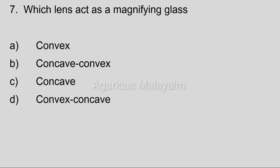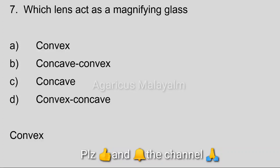Seventh question. Which lens acts as a magnifying glass? Option A, convex. Option B, concave convex. Option C, concave. Option D, convex concave. Correct answer: Option A, convex lens.